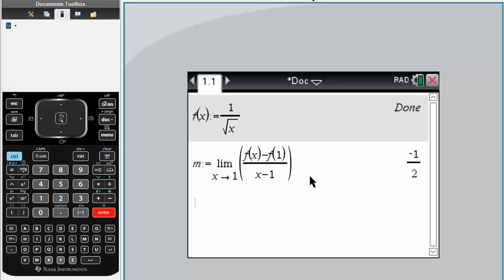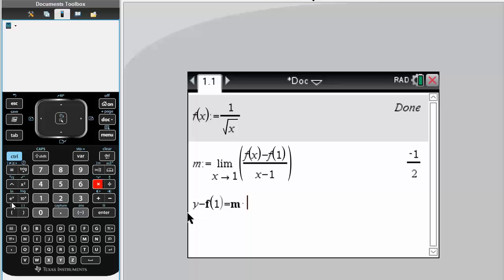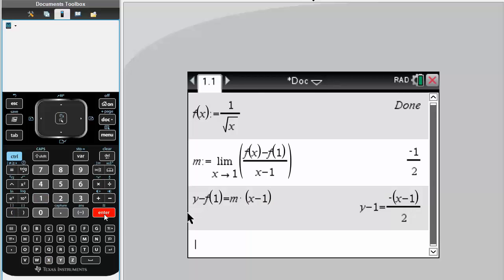Now we want the equation, so we're going to do y minus f(1) - that was our point - equals m (the slope) times (x - 1). We want it in a simpler form.